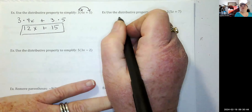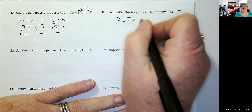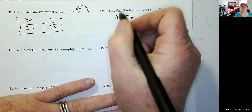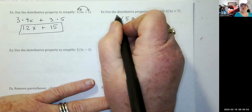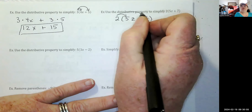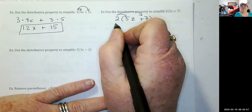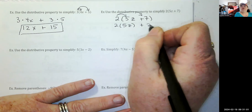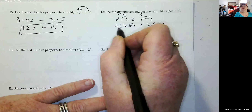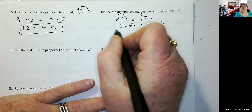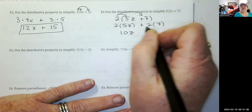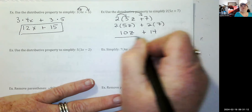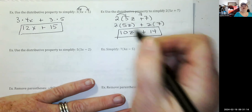Let's do two times the quantity 5z plus 7. Pause and try it yourself first. Two times 5z plus two times 7: two times five is 10z, plus two times seven is 14. The answer is 10z plus 14.